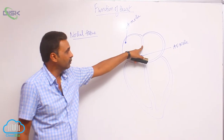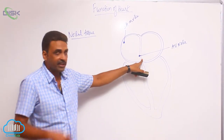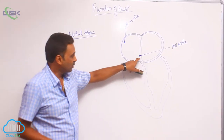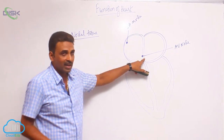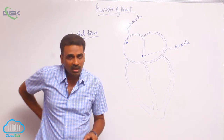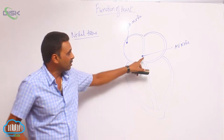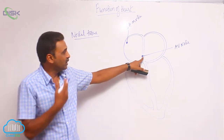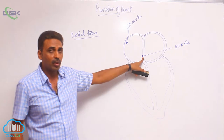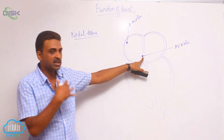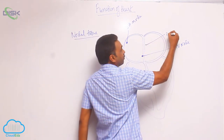This is the inter-atrial septum, and at the inferior side — superior to inferior — this is the inferior side, and towards the dorsal side, anterior to posterior. So it should be a little to the posterior side, or a little to the dorsal side of the inter-atrial septum.